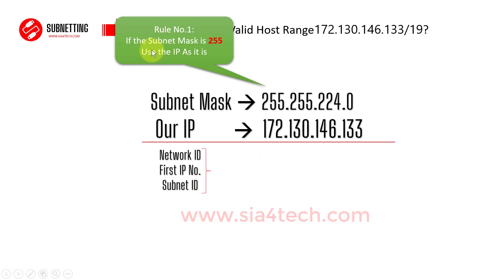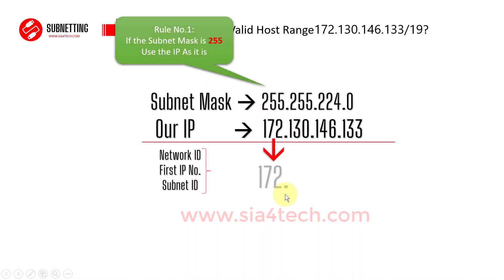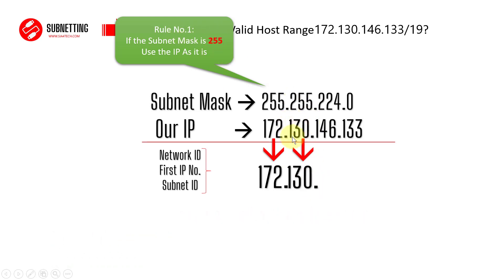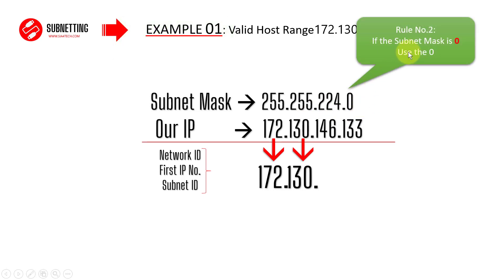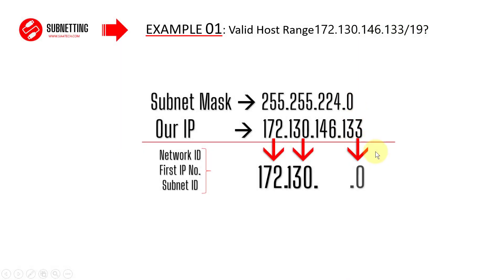We have three rules to find the Network ID. Rule one says: if the subnet mask is 255, use the IP as it is. So for the first octet we have 255, we use 172 as it is. For the second octet we also have 255, so we use the IP as it is. The third octet is not 255, so we skip to the last octet for Rule 2. Rule two says: if the subnet mask is zero, use zero — don't use the IP address.